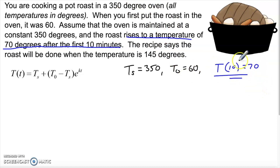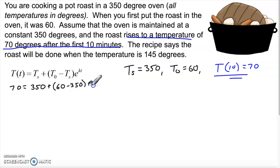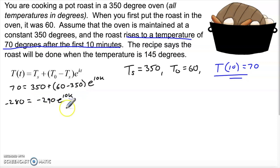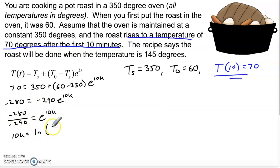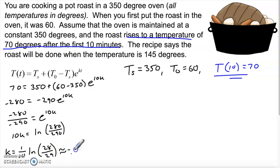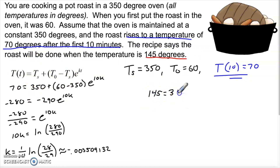We start by finding k. Plugging in: 70 = 350 + (60 - 350) × e^(10k), which gives 70 = 350 - 290e^(10k). So -280 = -290e^(10k). Dividing both sides by -290: 280/290 = e^(10k). Taking the natural log of both sides: 10k = ln(28/29), so k = (1/10) × ln(28/29) ≈ −0.00350913. Now that I know k, I plug into the original equation with the goal of reaching 145 degrees.